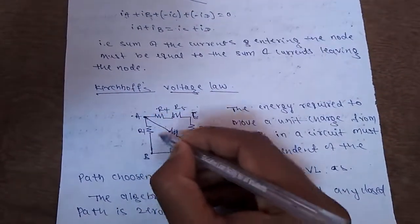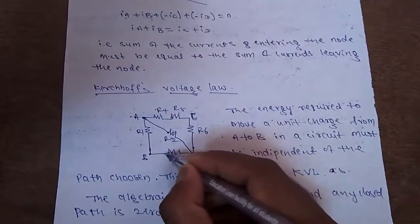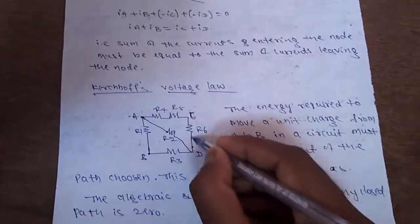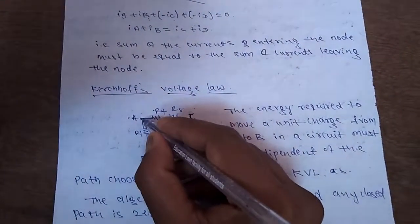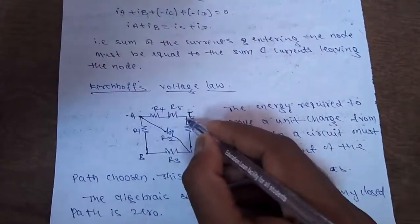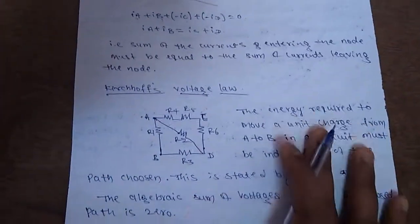In that I didn't mention the path it has taken. The charge may either move like this, or either the charge may move in this format, like this it can move, but it takes same amount of energy to move from this path or this path. This is stated by Kirchhoff's voltage law.